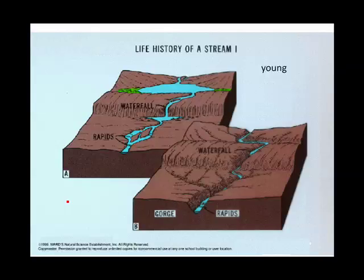Looking at a young river, notice that we have waterfalls and rapids. If you see any white water, you know you've got a young river. Over a period of time, the waterfall has moved back. That movement is called headward erosion because it's eroding toward the headwaters. Eventually, every waterfall will erode itself out of existence.